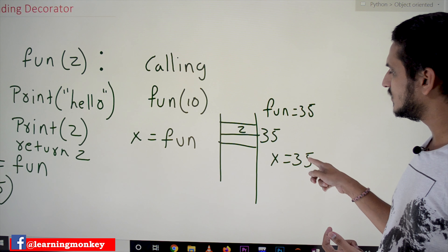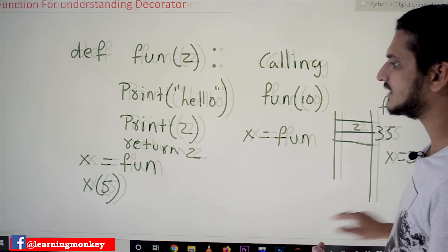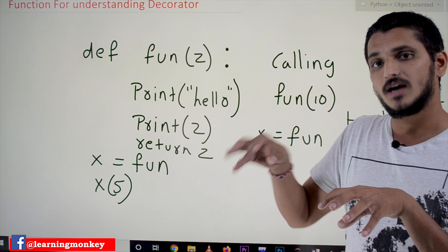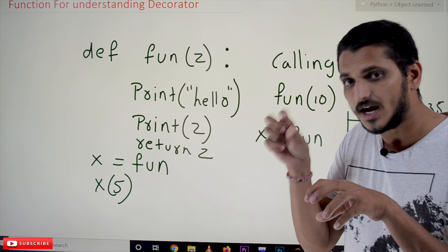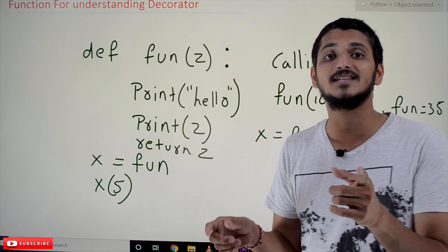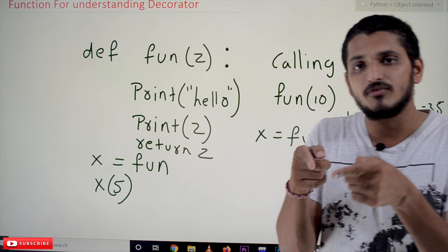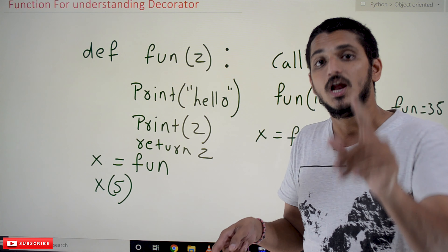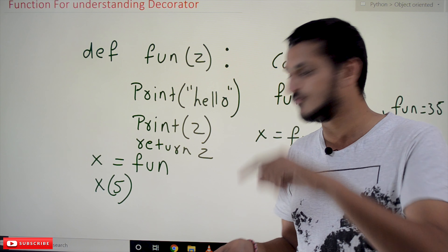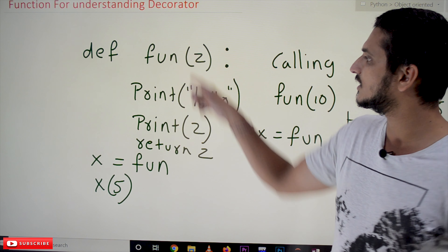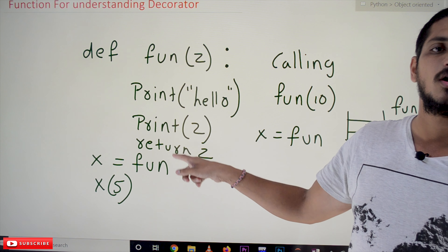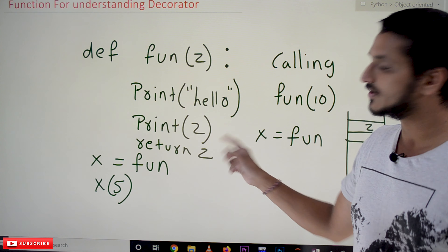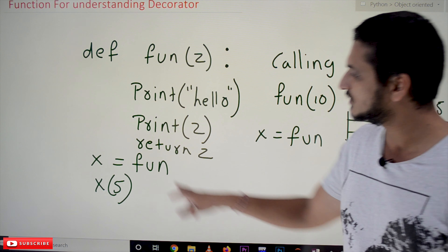So now 35 is given to x. x is equal to fun means fun has created an object of type function and that memory address is assigned to x — meaning x and fun both are referencing to the same memory location. This is very important to understand. Now we can use x as a function variable: x(5) calls the function, which will display hello, print 5, and return the value 5.